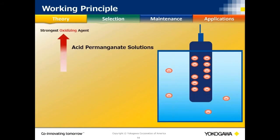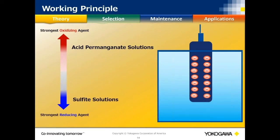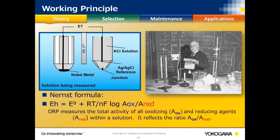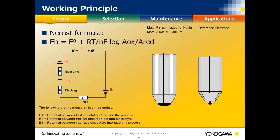Looking at the working principle with an acid permanganate solution: it's strongly oxidizing because it strongly attracts electrons from the redox electrode, so the potential is very highly positive. The opposite — sulfite — is strongly reducing because it pushes electrons into the electrode, giving a strongly negative reading. The calculation all analyzers use is the Nernst equation, the same as with pH, except instead of a pH glass electrode, you're looking at a noble metal and the process's ability to generate a millivoltage on it.